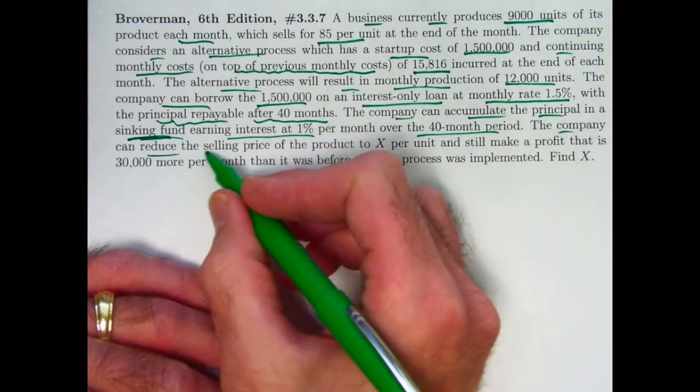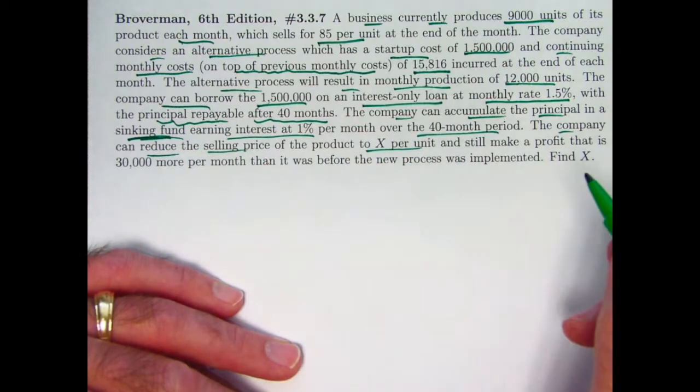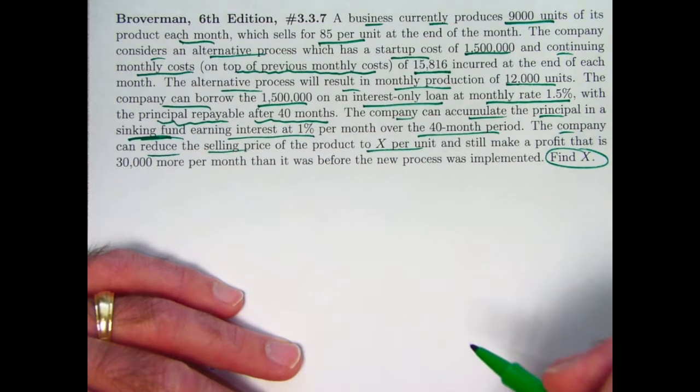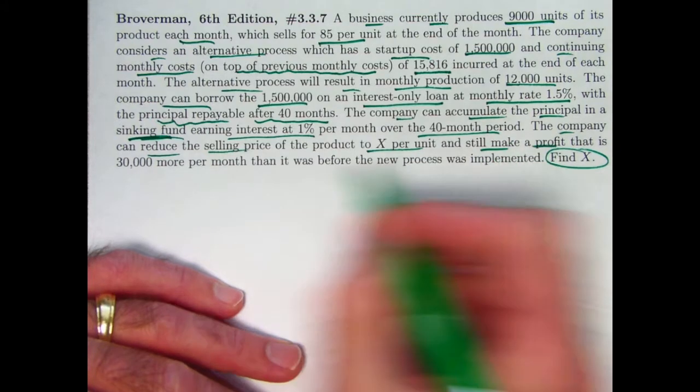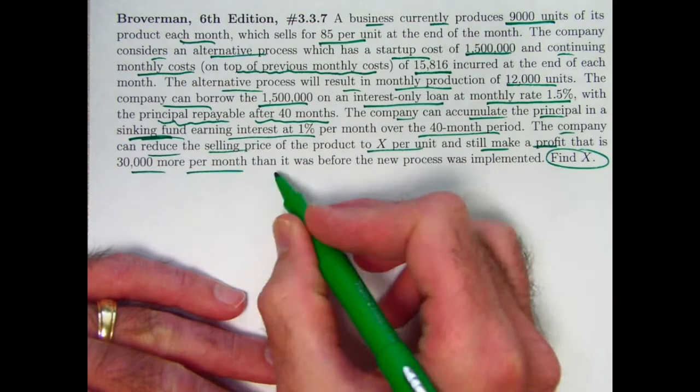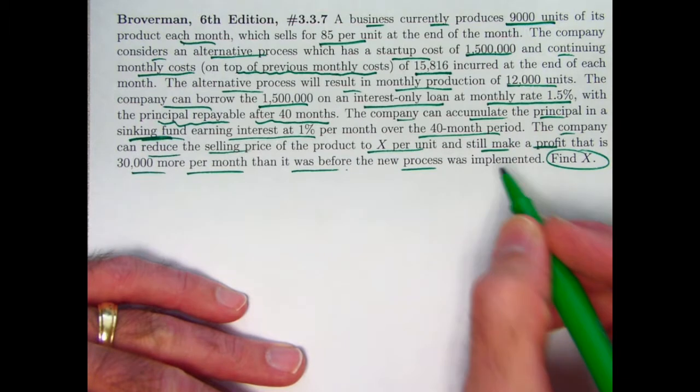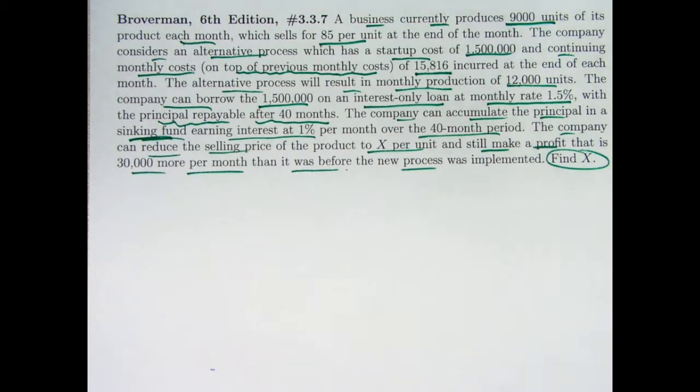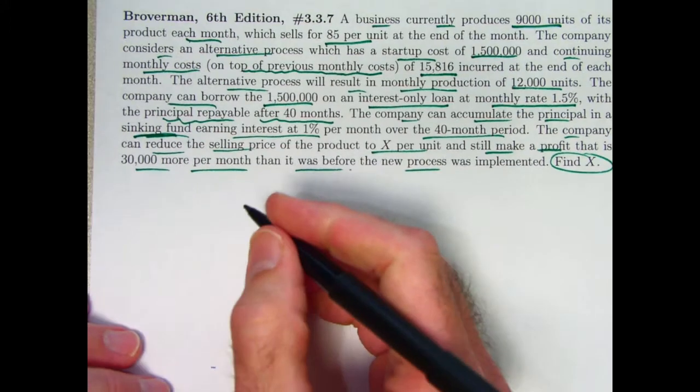The company is going to reduce the selling price to X per unit. We're going to find X at the end here. It's still going to make a profit that is $30,000 more per month than it was before the new process was implemented. It's selling more at a lower price, evidently, but it's going to have a higher profit. All right, again, just break things down piece by piece.